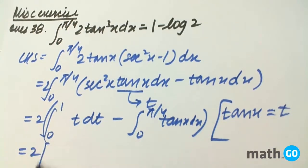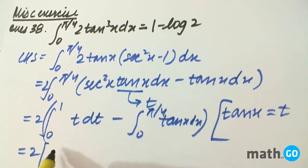So we will be left with t²/2. On putting the limits we will get 1/2 minus.